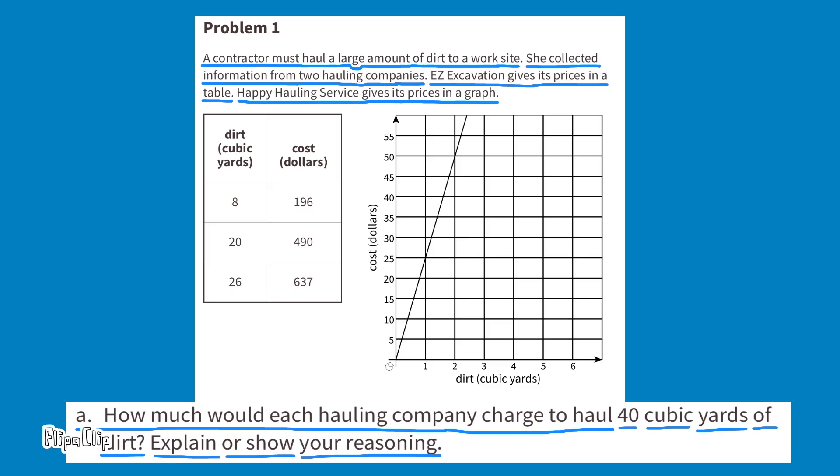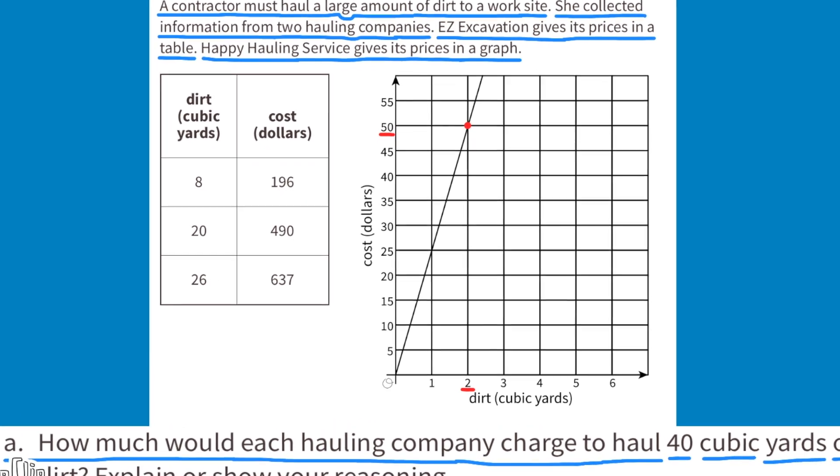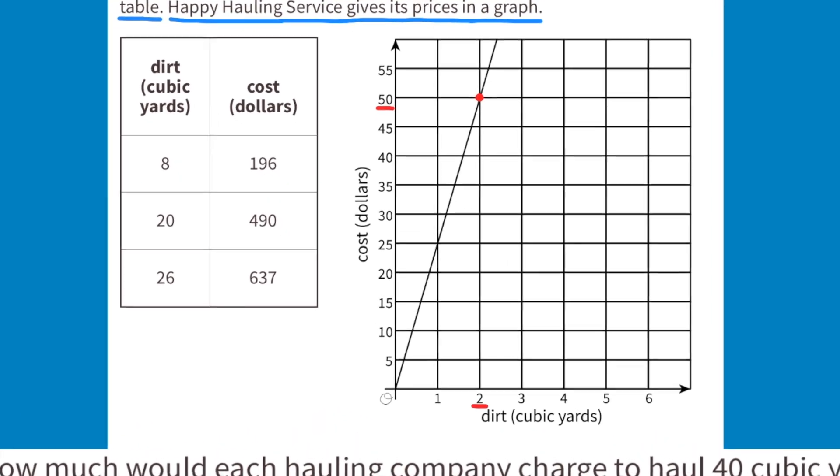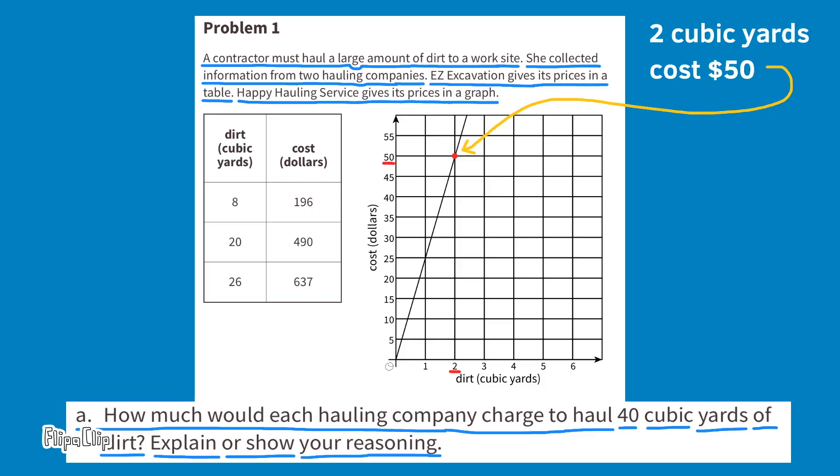Let's start by looking at Happy Hauling's graph. I noticed that the line on the graph passes through the crosshairs at X value 2 and Y value 50. I'll put a point at X value 2 and Y value 50. This tells me that two cubic yards of soil cost $50. That's a ratio of 2 to 50. They're asking us to haul 40 cubic yards of soil. That's going to be a ratio of 40 to 1,000. Happy Hauling Services would charge $1,000 to haul 40 cubic yards of soil.